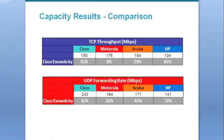Cisco outperformed every competitor in capacity testing using both TCP and UDP traffic types. In the TCP tests, Cisco outperformed the competition by as much as 83%. In the UDP tests, Cisco outperformed the competition by as much as 72%. This testing clearly indicates that Cisco is ideal for applications where there are large numbers of wireless clients on the network, particularly in verticals such as carpeted enterprises, healthcare, and education.